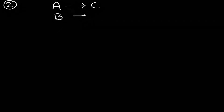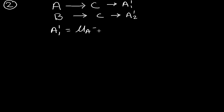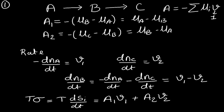Moving to the second case: two independent reactions — A converting into C, and B also converting into C. These reactions are independent and do not influence each other. Let A1' be the affinity of the first reaction and A2' be the affinity of the second. The affinity A1' = μA − μC.